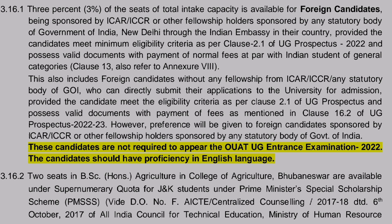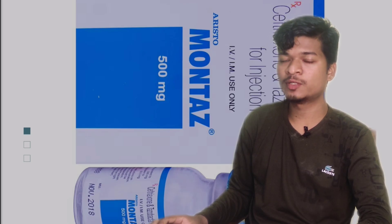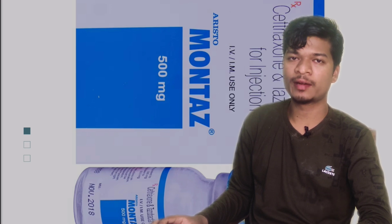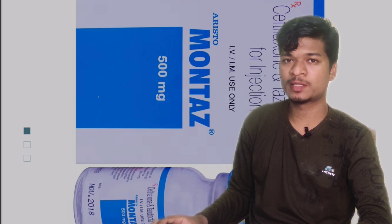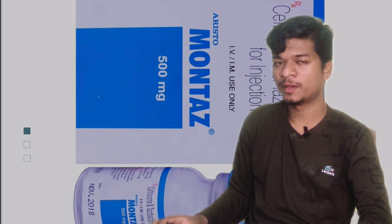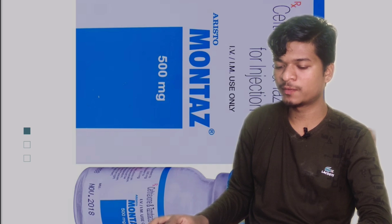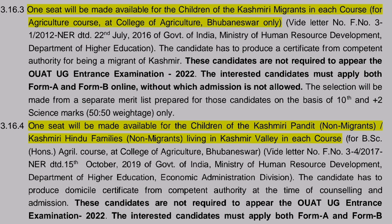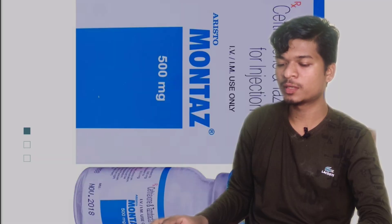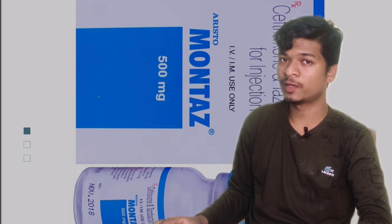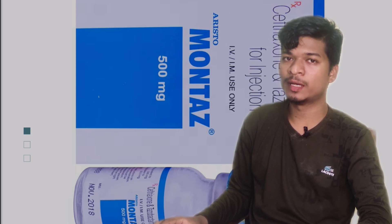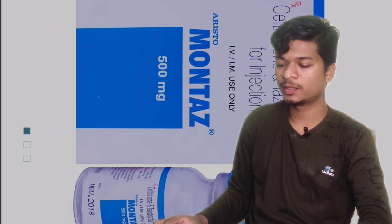Foreign candidates can be admitted through the Indian Embassy in their country or directly through the university, provided they are eligible. Candidates not sponsored by ICAR or any statutory body can also directly apply to the university for admission. Regarding Kashmiri Pandits: one seat will be made available for children of Kashmiri migrants in each course. If you are a Kashmiri migrant seeking admission in agriculture, the campus that will be allotted is Bhubaneswar only.